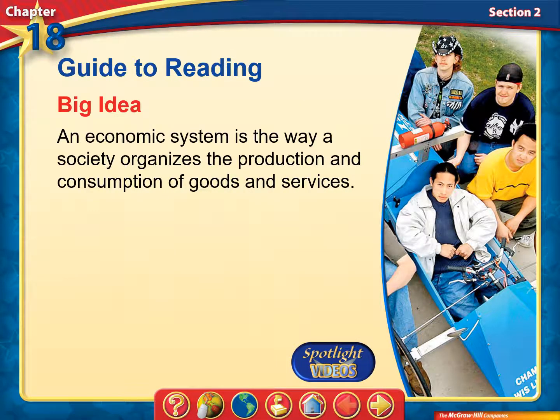Section 2. The big idea here is that economic systems are the way in which a society organizes production and consumption of goods and services.